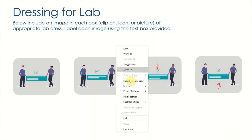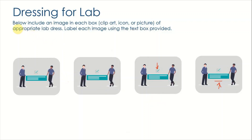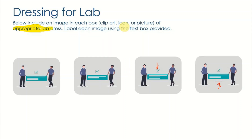Another useful tool is the Highlighter — you can highlight specific text or objects on the slide. As a bonus tip: if you want to quickly hide everything on the screen during a presentation, press the B key to black out the screen. Press W to white out instead. Press any key to bring the presentation back.